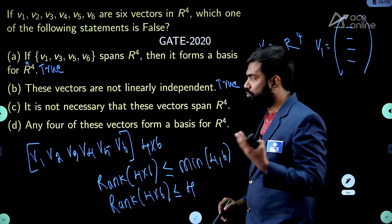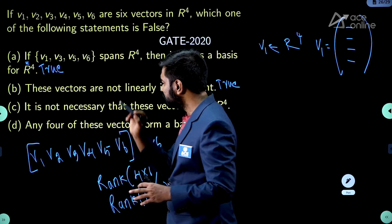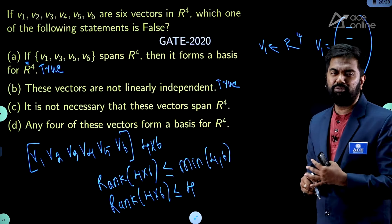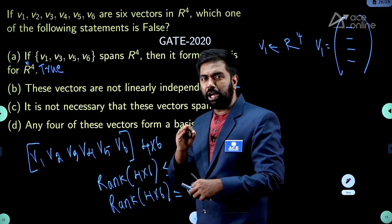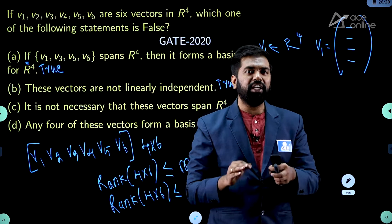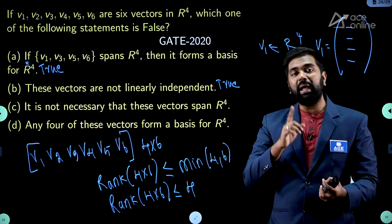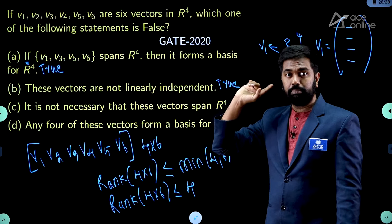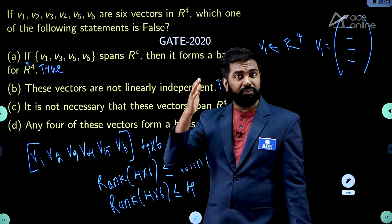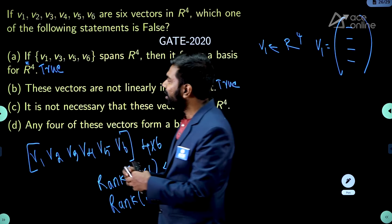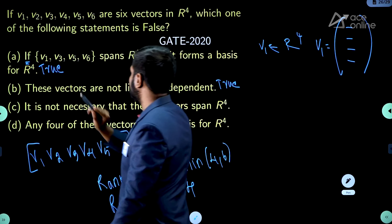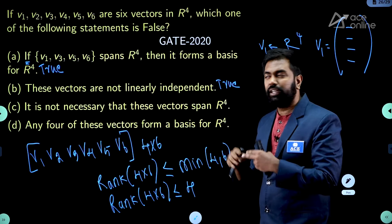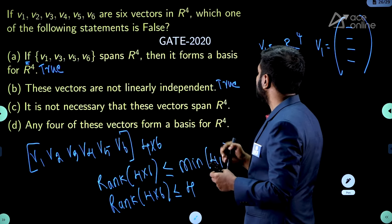Option C: it is not necessary that these vectors span R⁴. When you come out of option A, V₁ through V₆ can be any vectors — they need not span R⁴. For example, take vectors like V₁=(1,0,0,0), V₂=(2,0,0,0), V₃=(3,0,0,0), V₄=(4,0,0,0) — these don't span R⁴ at all, since all other components are zero. So it is not necessary that these 6 vectors span R⁴ — also a true statement.